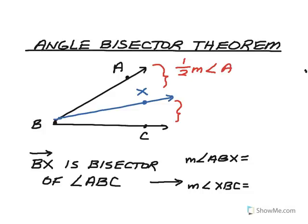So in this case, if a ray BX is an angle bisector of angle ABC, then angle ABX is half the measure of the big angle.